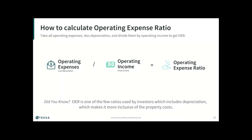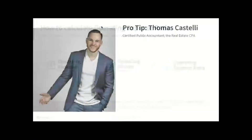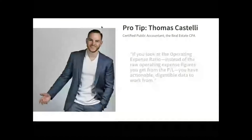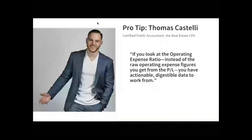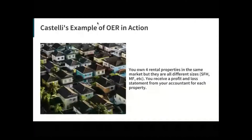Here's an example that Thomas Costelli of the real estate CPA firm gave us that I really like. Assume an investor owns four properties in the same market, but they're all different sizes — duplexes, maybe a small apartment building, a condo, a single family home. You receive a profit and loss statement from your accountant for each property, and you see the total operating expenses for each property.